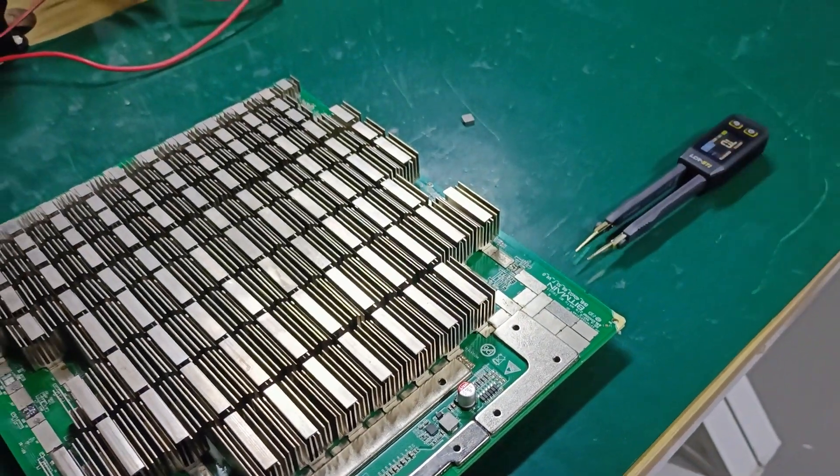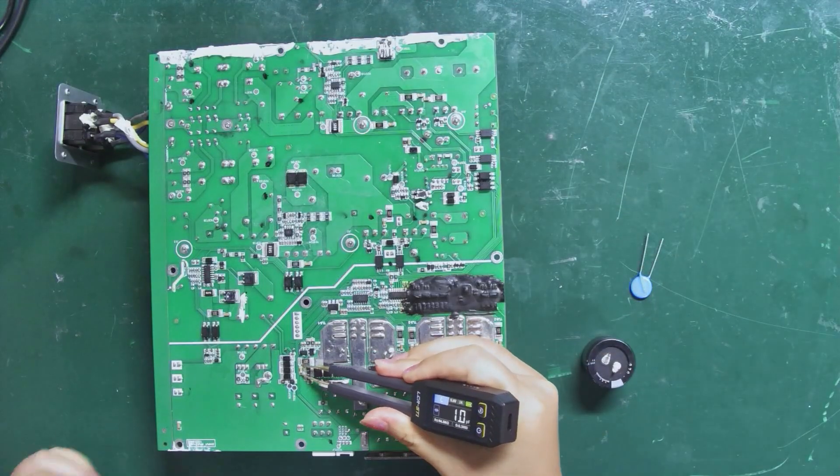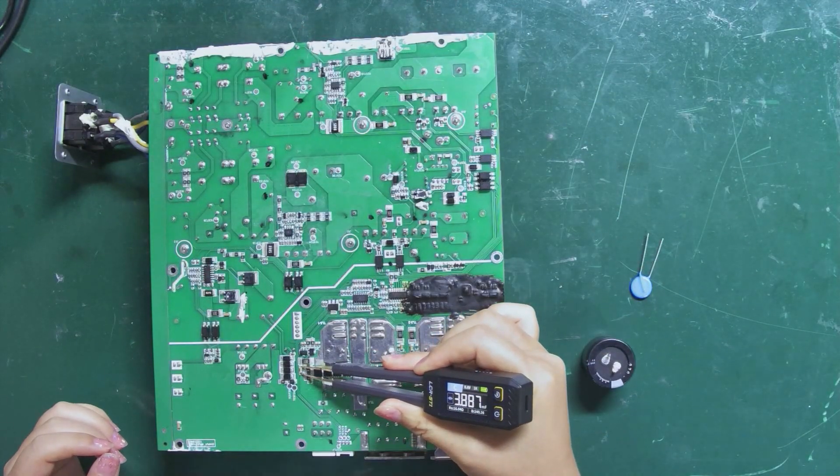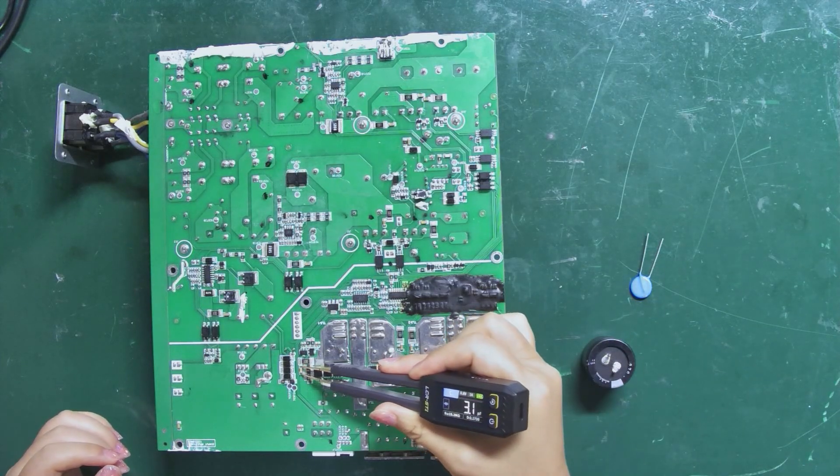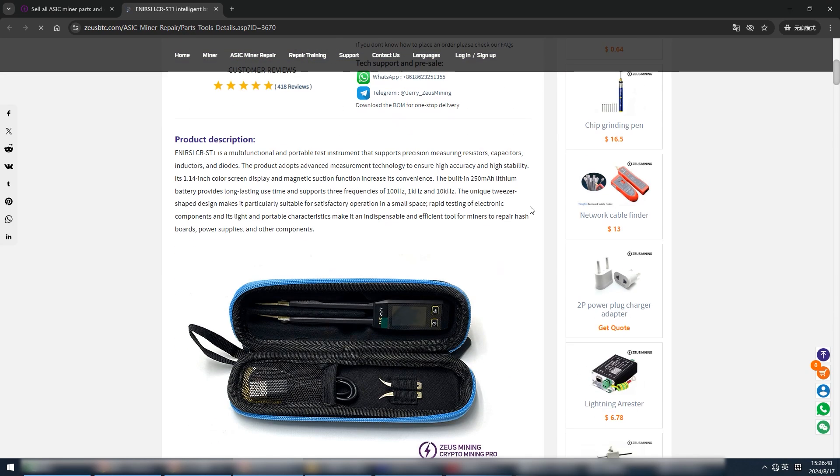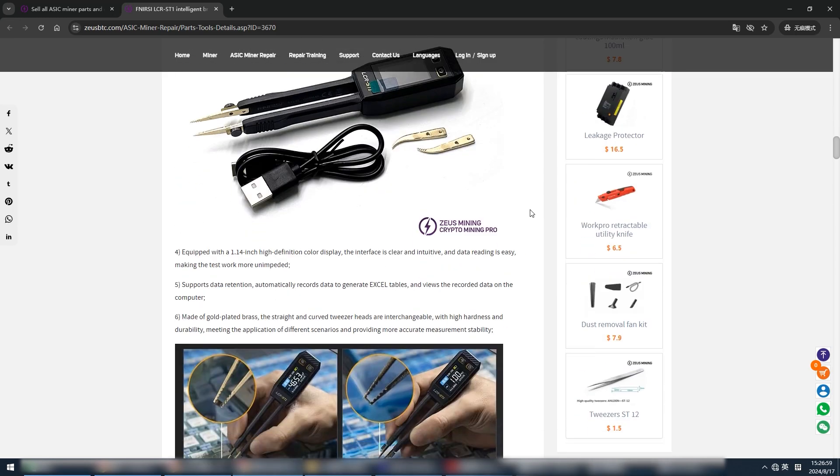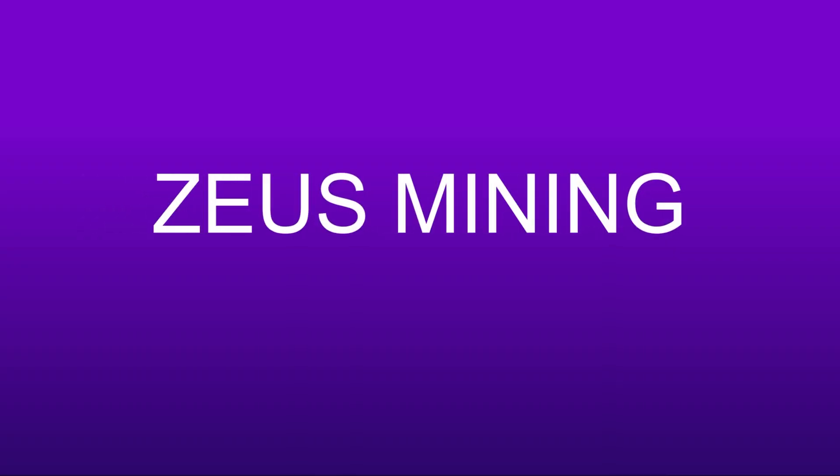The measurement is completed. The usage method is simple and convenient. It's a necessary tool for repairing hash boards, PSU boards, or other PCB boards. Well, the above is the usage method of the smart bridge tweezers. Thanks for watching.